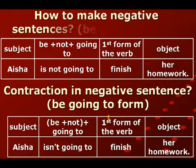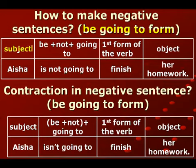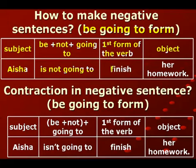إذن how to make negative sentences في be going to form - يعني كيف نكتب الجملة المنفية في المستقبل البسيط النوع الثاني. إذا نبغي ننشئ الجملة المنفية، أول شي subject، وشي ثاني be، وبعدين not، وبعدين going to، وبعد going to نحط first form of the verb، وأخيراً object أو rest of the sentence. المثال: Aysha is not going to finish her homework - يعني عيشة ما بتخلص واجباتها.